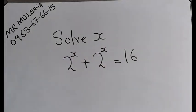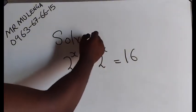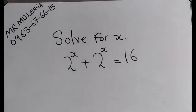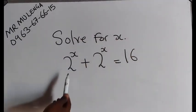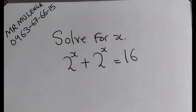Solve for x. You solve for x, meaning that you find the value of x. So here, you have 2 raised to the power of x plus 2 raised to the power of x is equal to 16.